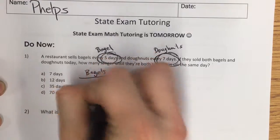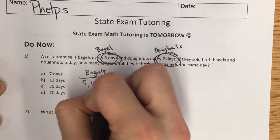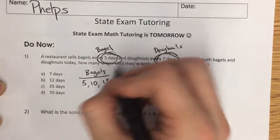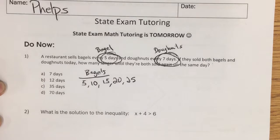If they sold them today, they'll sell them again in five days, 10 days, 15 days, 20, and 25. Now donuts,